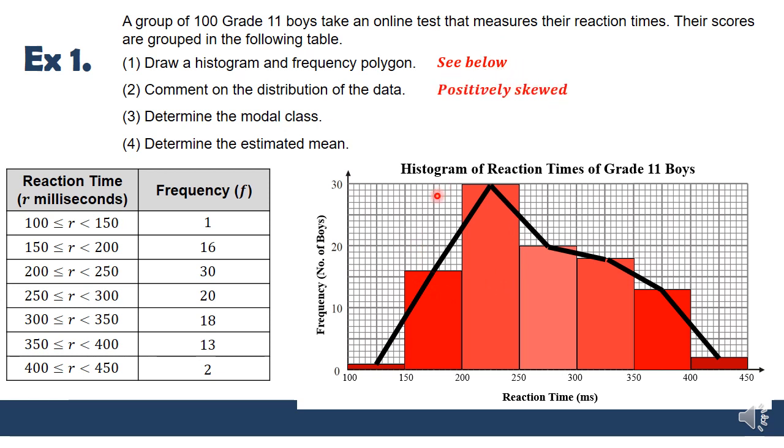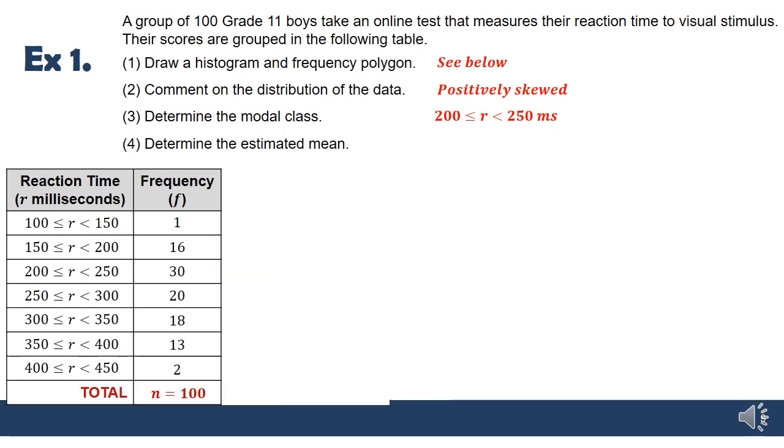The modal class, this is the easiest one that you're ever going to be asked. Hopefully you get asked on an exam. Modal class is just the one that has the highest frequency, so that has to be 200 to 250, or you can see it by looking for the tallest bar on your histogram. So there's my modal class, I've given milliseconds as the unit. Then determine estimated mean. Now this is where it gets a little bit more involved.